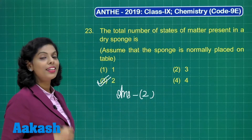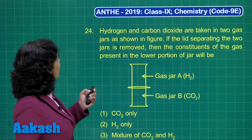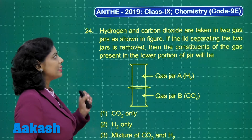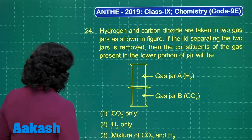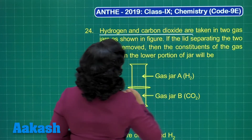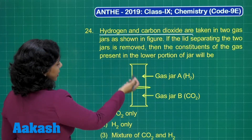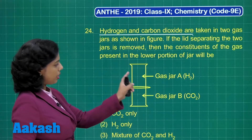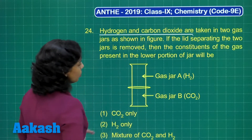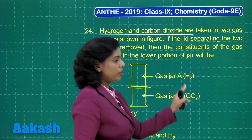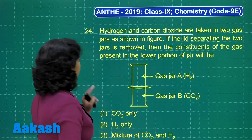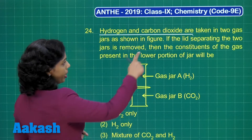Now question number 24: hydrogen and carbon dioxide are taken in two gas jars. There are two gases — hydrogen and carbon dioxide. In the figure, there is gas jar A and gas jar B. In gas jar A, hydrogen is present; in gas jar B, carbon dioxide is present.